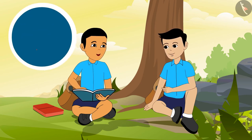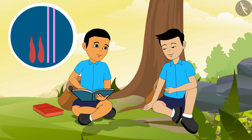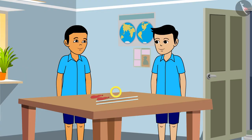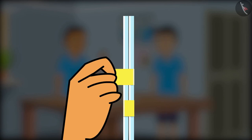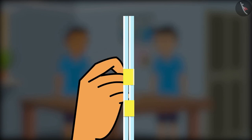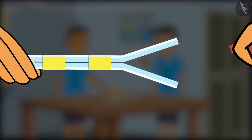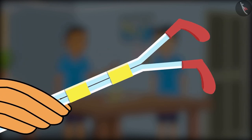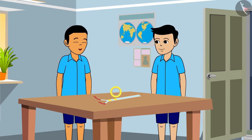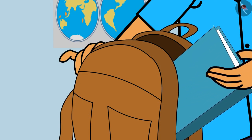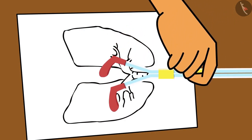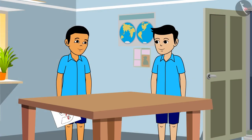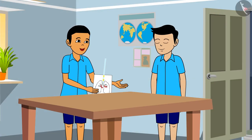Here is the material required — let us begin. Ram, let us join these two straws with a tape like this. And at the other two ends, let us fold the straw and attach the balloons on both straws. Let us take out the drawing we had made. Now let us attach this model. Ram, blow air from this side of the straws.